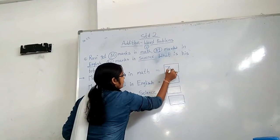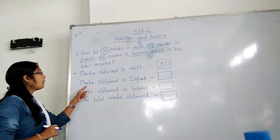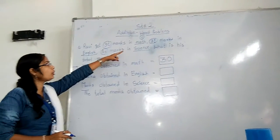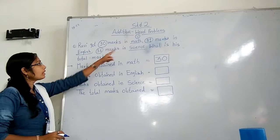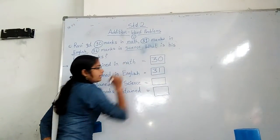So write here 30. Okay, then marks obtained in English. How many marks did he obtain in English? Look at that, 31. So write here 31.